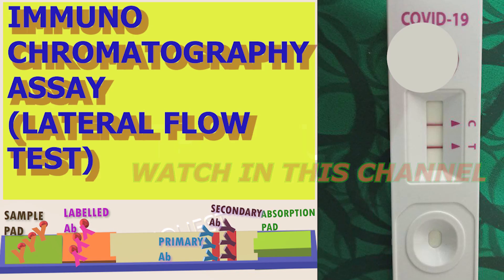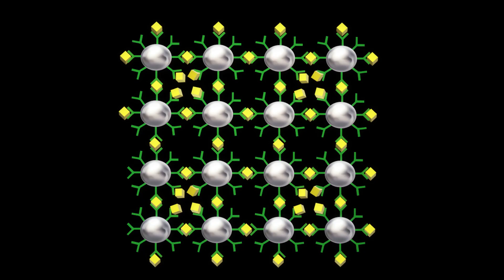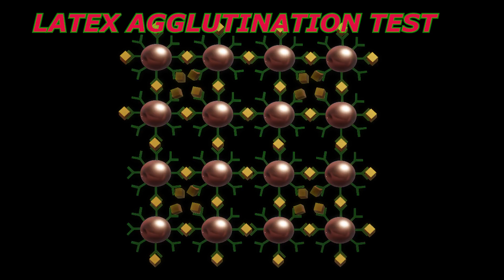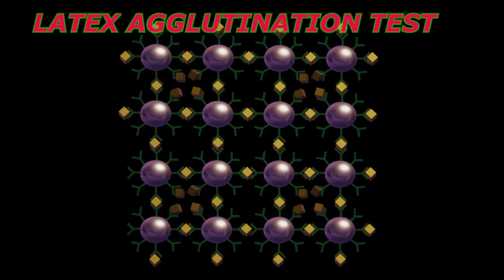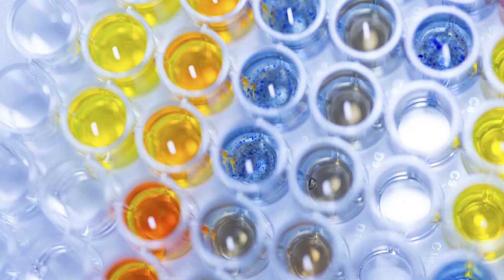Immunoassay. An immunoassay is a biochemical test that detects or measures the antibody present in the sample. The test can also detect the antigen in the sample. Immunoassays employ a variety of different labels to allow for detection of antibodies and antigens. Enzymes used in ELISA include horseradish peroxidase and alkaline phosphatase. The product can give a color change in the presence of certain reagents. Direct, indirect, sandwich, and competitive methods are used.